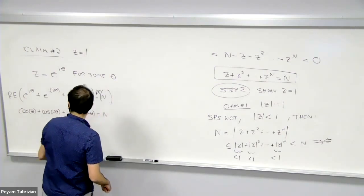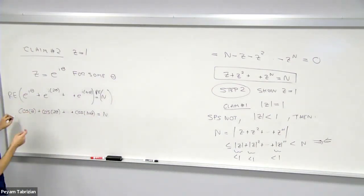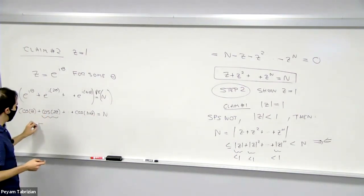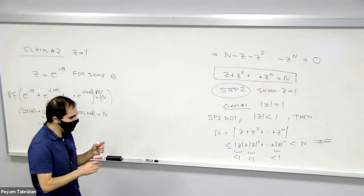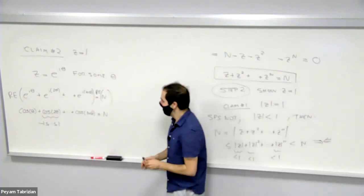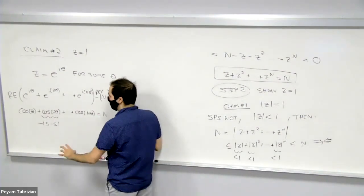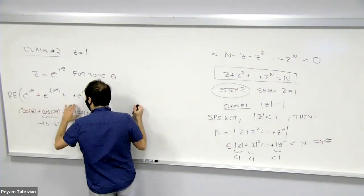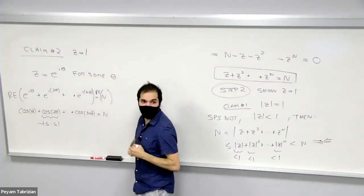And that is n. But here's the thing. Each of those terms is between -1 and 1. So how can those n terms add up to n? Well, the only way this happens is that each term is the maximum value, which is 1.